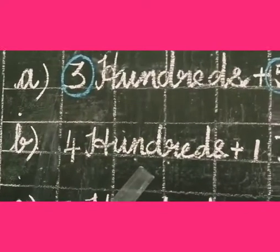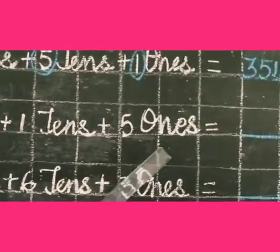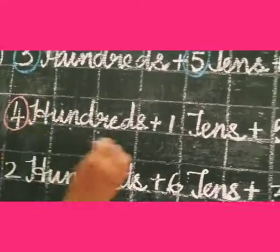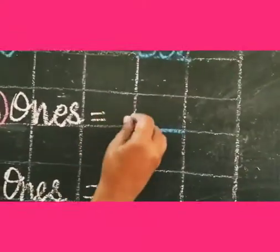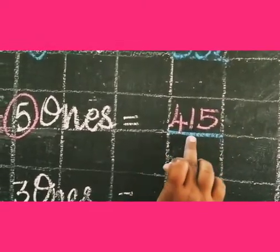Now, 400 plus 1 tens plus 5 ones. Circle the numbers: 4, 1, 5. Just write these numbers. 4, 1, 5 equals 415.